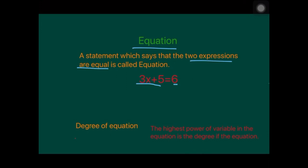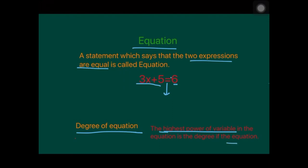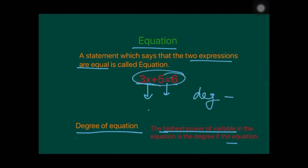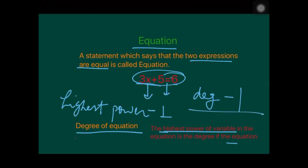The next important thing is the degree of an equation. The degree of an equation is the highest power of the variable. In 3x plus 5 equals 6, the variable is X and the highest power is 1, so the degree of this equation is 1.